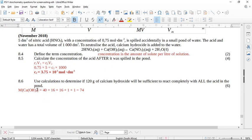Now it says use calculations to determine if 120 grams of calcium hydroxide will be sufficient to react completely with all the acid in the pond. I have to tell you there's a lot of ways that are all chemically and mathematically sound to solve this. I saw in the memo that there's three options. So long as you can back everything up with your mole ratios and your calculations, you should be fine.